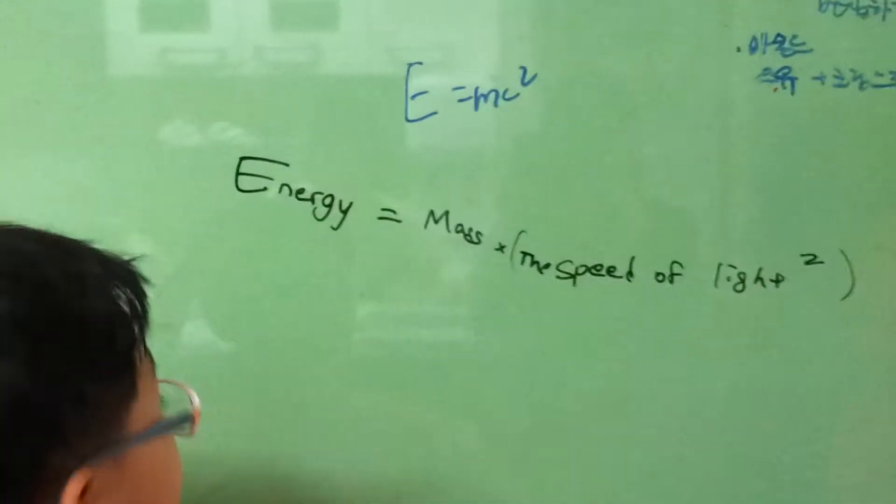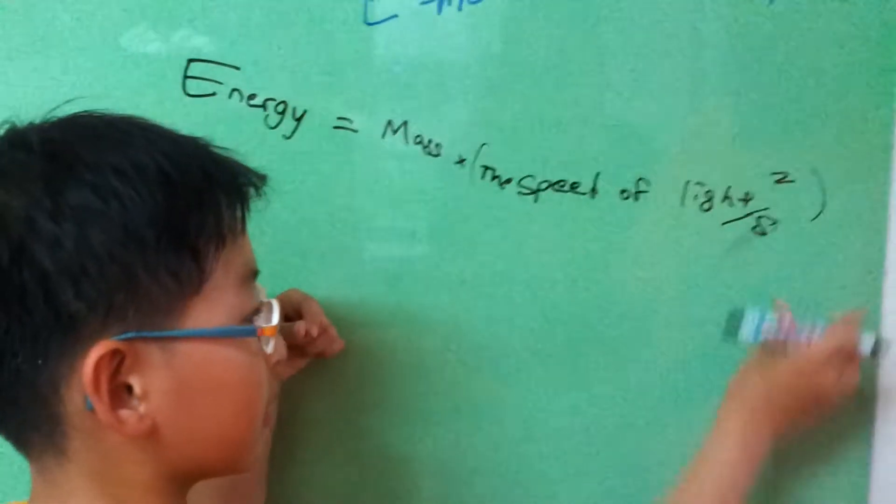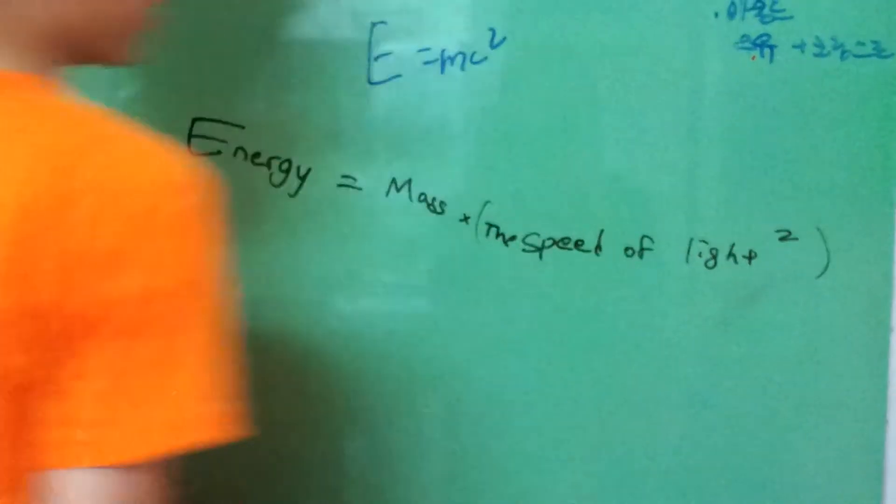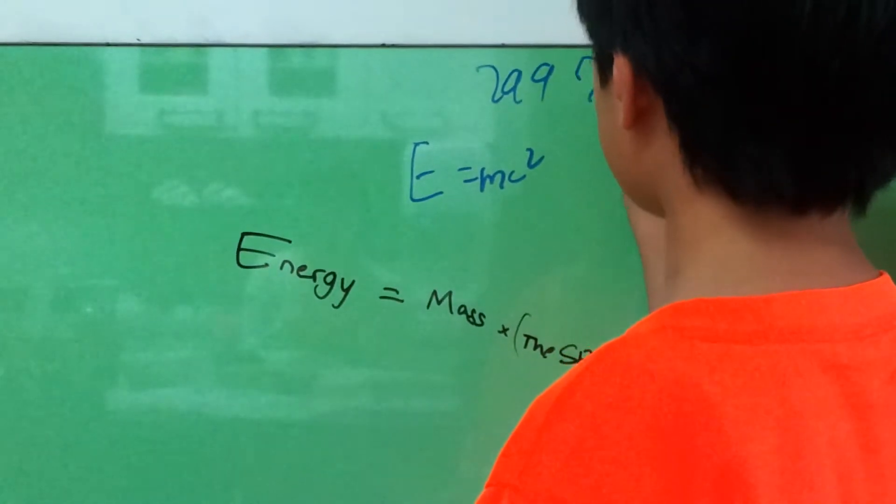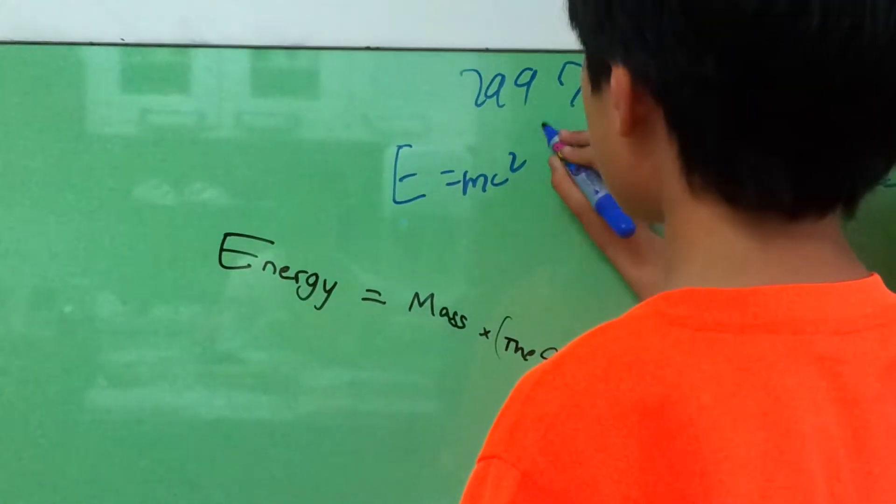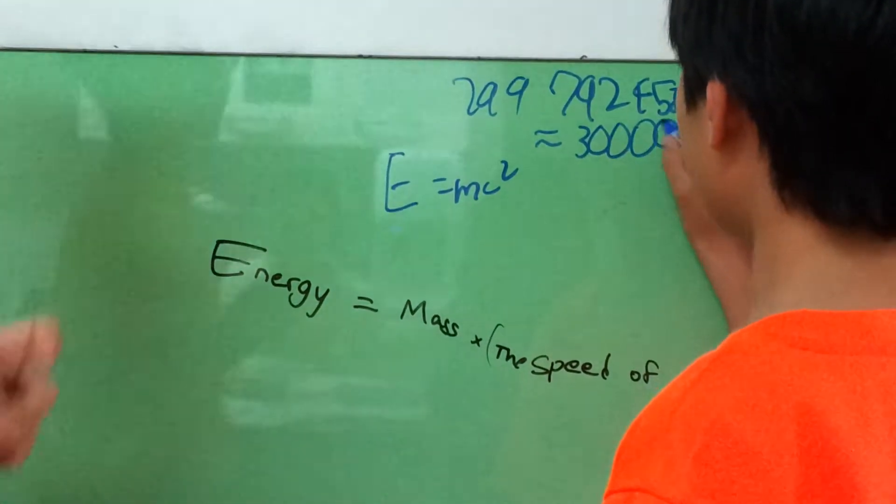This will be in seconds. That means 2,9,9,7,9,2,4,5,8. How did you memorize that? Just, which is approximately 3,0,0,0.